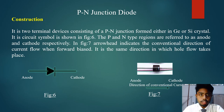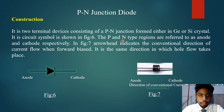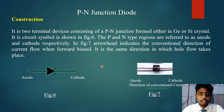In a P-N junction diode, it is a two-terminal device consisting of a P-N junction formed either in germanium or silicon crystal. Its circuit symbol is shown in the figure. The P and N type regions are referred to as anode and cathode respectively. The arrow in the symbol indicates the conventional direction of current flow when forward biased, which is the same direction in which hole flow takes place.